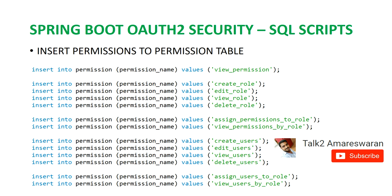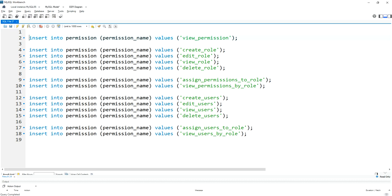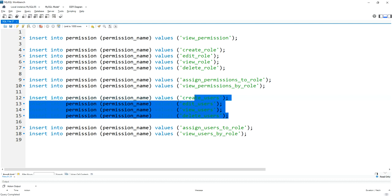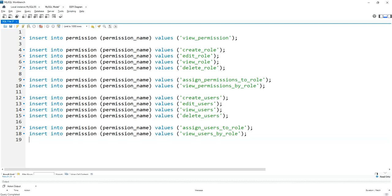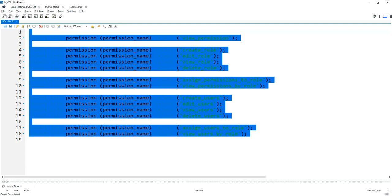So I am creating default entries in the permission table. Any new permission you add must be a default insert entry added by the developer. If it is a big project, the DevOps team will insert this entry in the permission table. Now I am going to insert all the permissions in the database using MySQL Workbench — there are a total of 13 permissions. Now I am going to create these 13 permissions in the permission table.